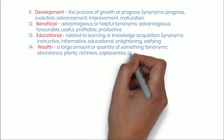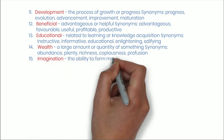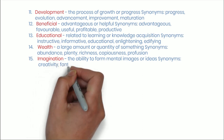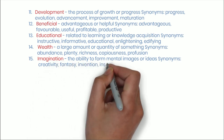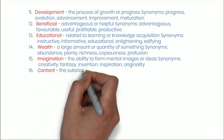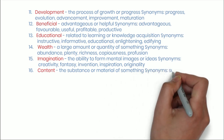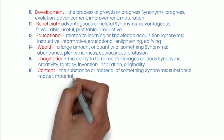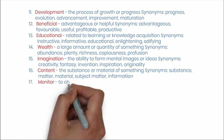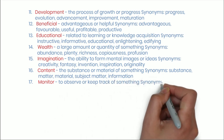Number fifteen: Imagination — the ability to form mental images or ideas. Synonyms: creativity, fantasy, invention, inspiration, originality. Number sixteen: Content — the substance or material of something. Synonyms: substance, matter, material, subject matter, information. Number seventeen: Monitor — to observe or keep track of something. Synonyms: observe, watch, track, supervise, oversee.